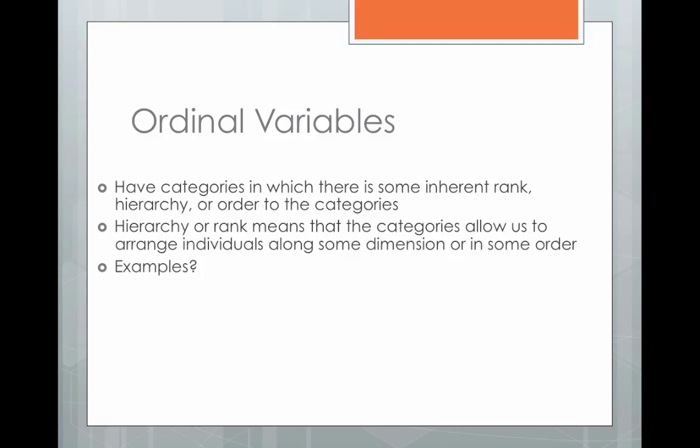It would be strange to see the categories positioned as strongly agree, disagree, neutral, agree, strongly disagree — it makes sense to have them in order from least agreeable to most agreeable. So anything that can go from least to most, highest to lowest, that is ordinal. Sometimes we will measure age as an ordinal variable by giving age categories — check the box that corresponds with your age: 18 to 25, 26 to 35, 36 to 45, and so on. That's an ordinal level variable.